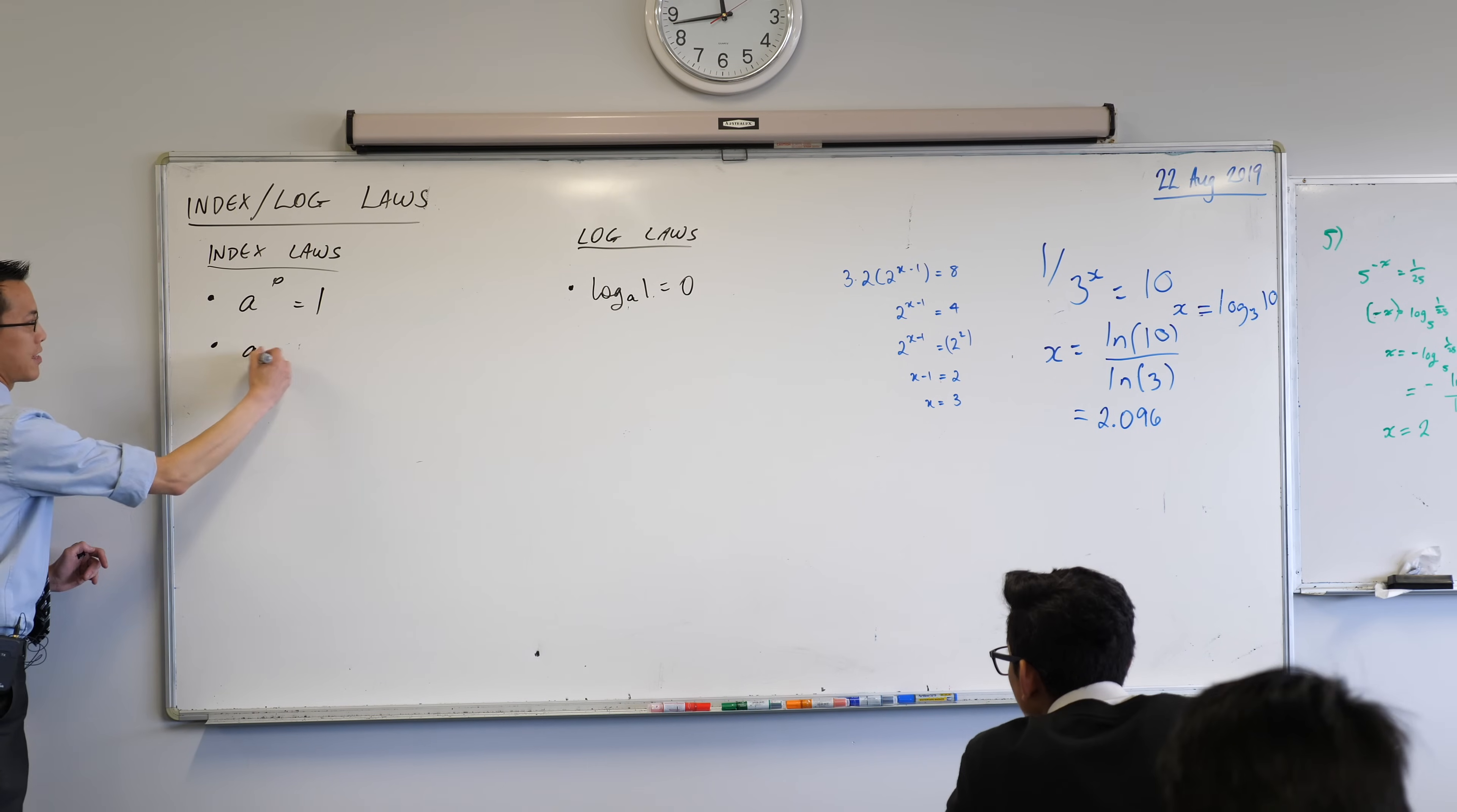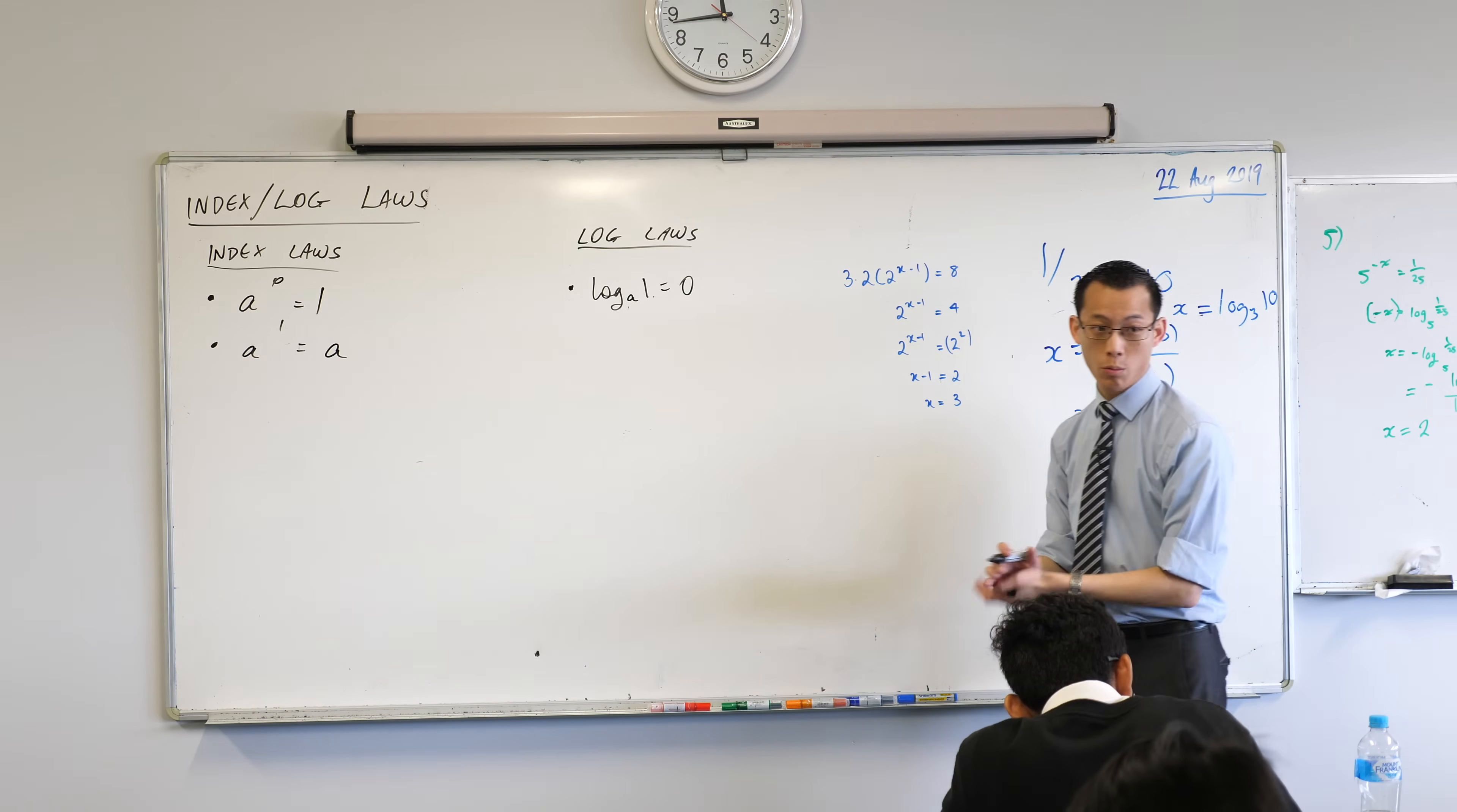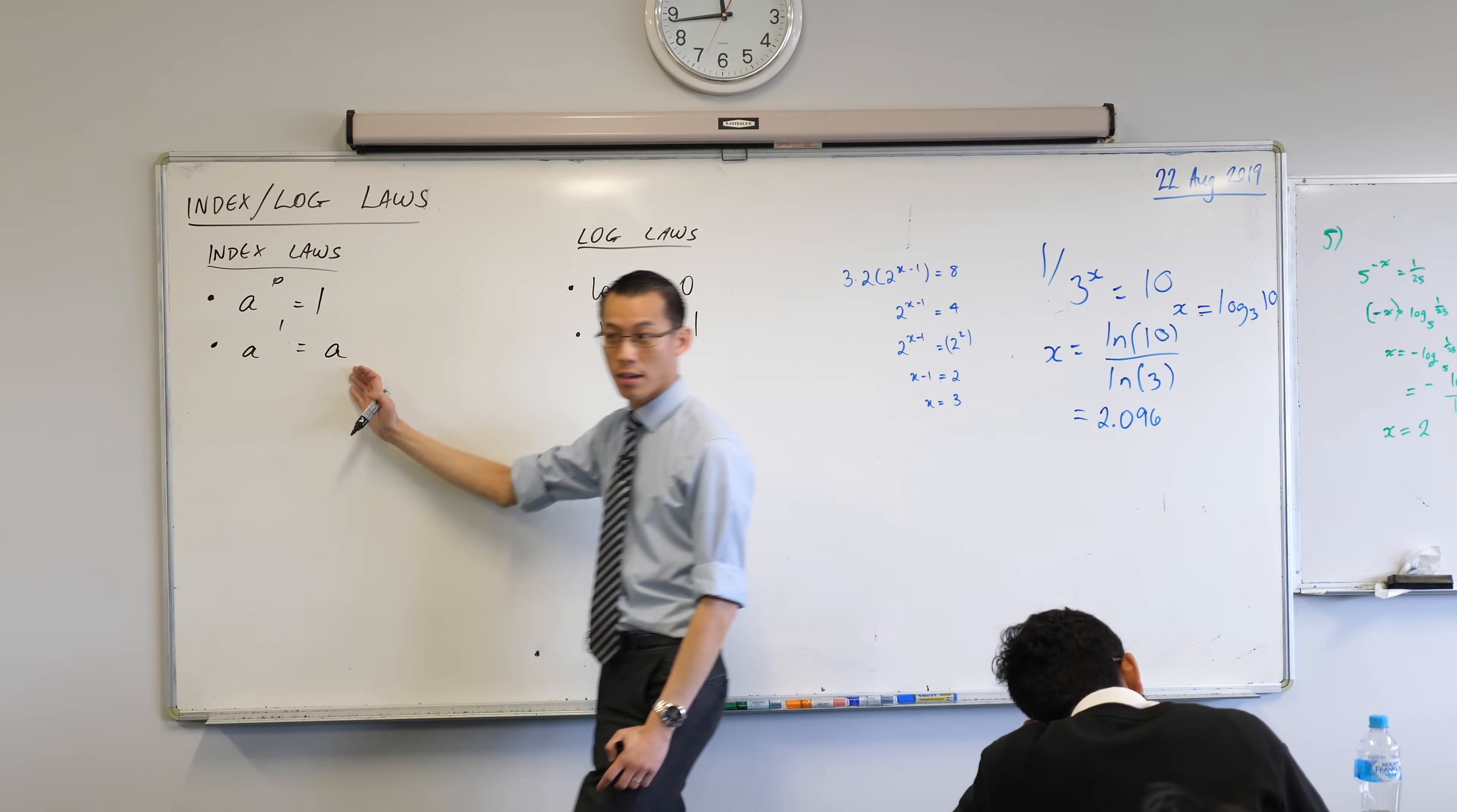Stay simple. A to the power of one is the identity index. So when you raise anything to the power of one, you get just the base that you got back. Let's think. What's the equivalent log law that goes along with this? I can just rewrite the same equation. Log base A of A equals one. So base is A. If the argument's the same number, you're going to get an answer of one, and this comes from over here.